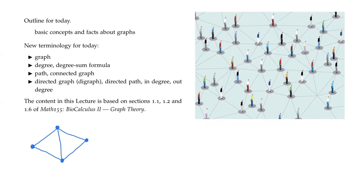They can also be used to represent food webs. We're going to be talking about things called directed graphs or digraphs. And if we now have arrows on these edges, that can represent the flow of energy in a food web. So these could be different species — for example, this could be grass, this could be rabbits, these could be foxes, maybe mice here.